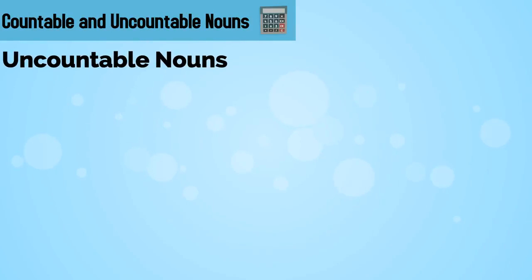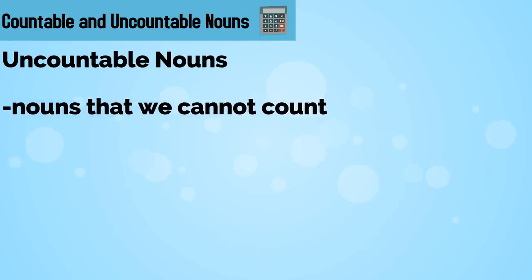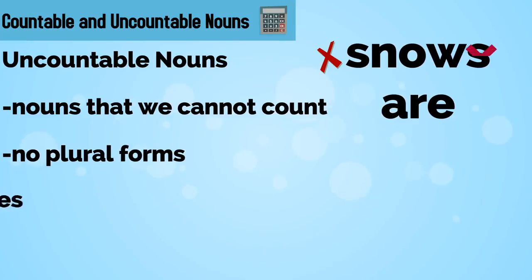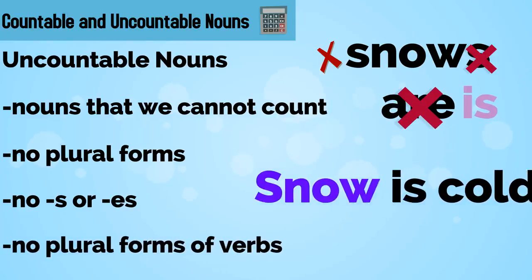Uncountable nouns are nouns that we cannot count. Therefore, these nouns do not have plural forms. They never have the plural endings s or es, and they never take plural forms of verbs. For example, snow is cold.